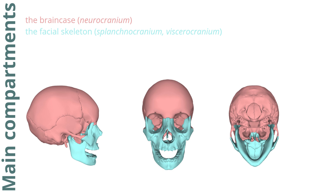The individual bones of the skull are mostly connected together by fibrous joints, so-called sutures (suturae). The exception is the mandible, which is connected to the skull by a joint (articulatio).